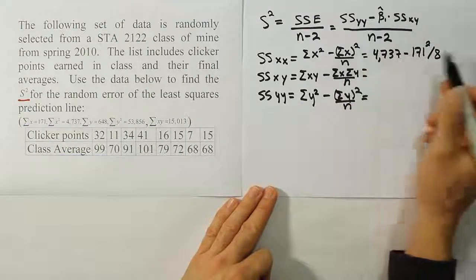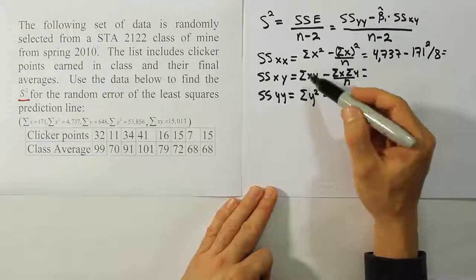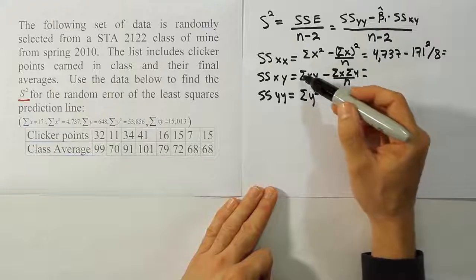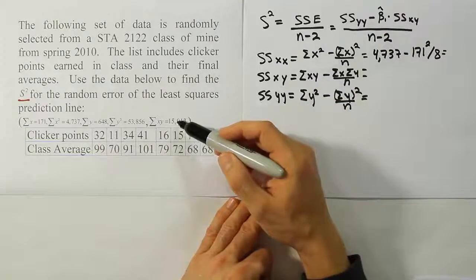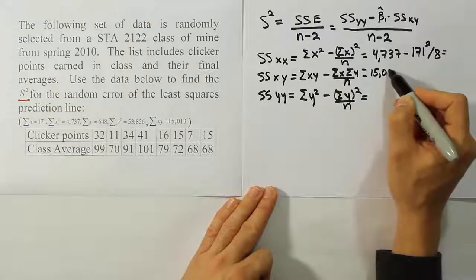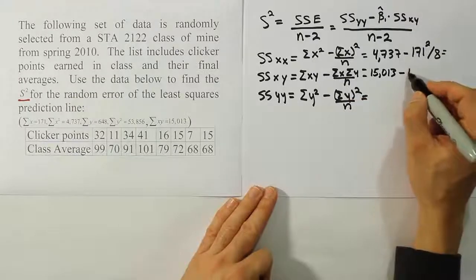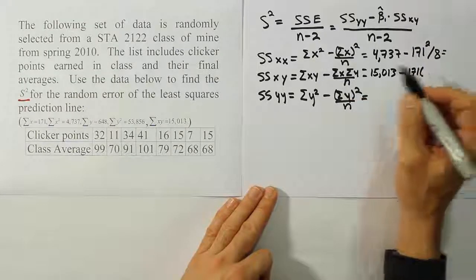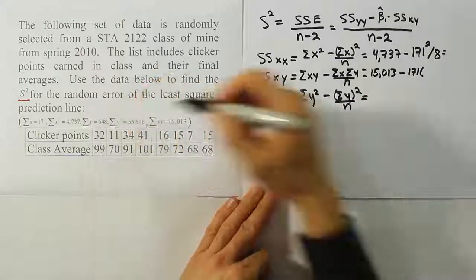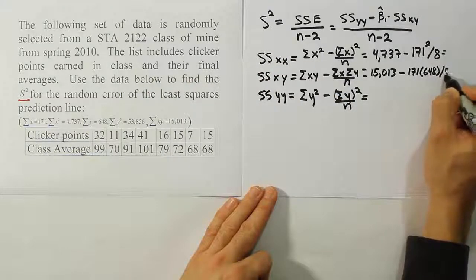Then do the same down here. I'll work out the values here in a moment with our calculator but let's work out the formula first. So the sum of XY is going to be 15,013, minus the sum of X times the sum of Y. That's 171 times the sum of Y is 648, all divided by 8.